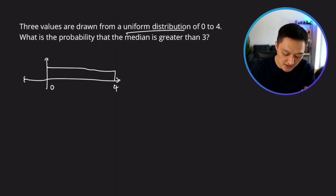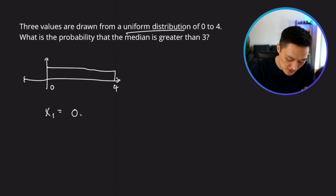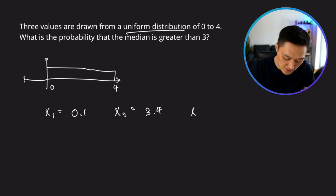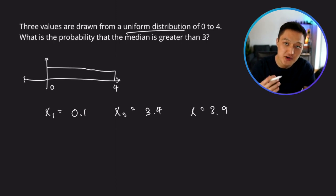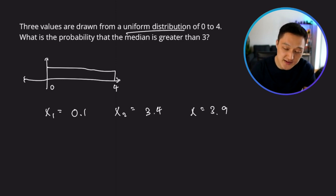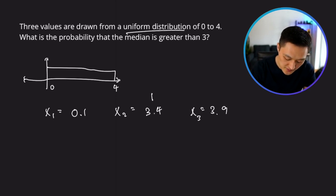So now what this means is that if you were to draw some random value x1 — let's say 0.1 — and then another random value, let's say 3.4, and then another, say 3.9. Now you have to ask yourself: what is the median of these three values x1, x2, and x3? The median is going to be the middle number, so the median of this set is going to be 3.4.